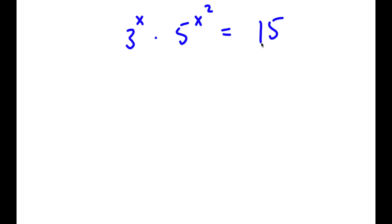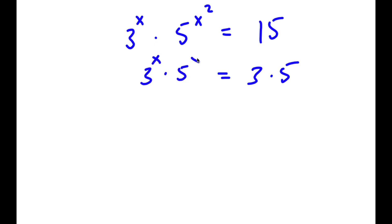Now 15 is the same thing as 3 times 5. So now I have 3 to the power of x times 5 to the power of x squared is equal to 3 times 5.